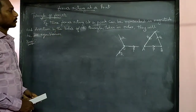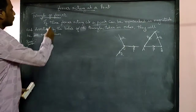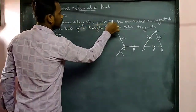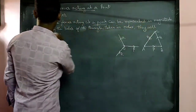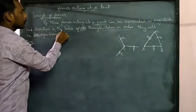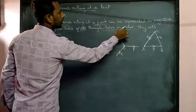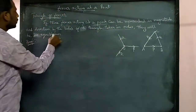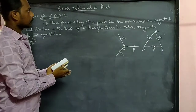I am going to explain the statement. If three forces acting at a point can be represented in magnitude and direction by the sides of a triangle, taken in order, then they will be in equilibrium. That is what I am going to explain.